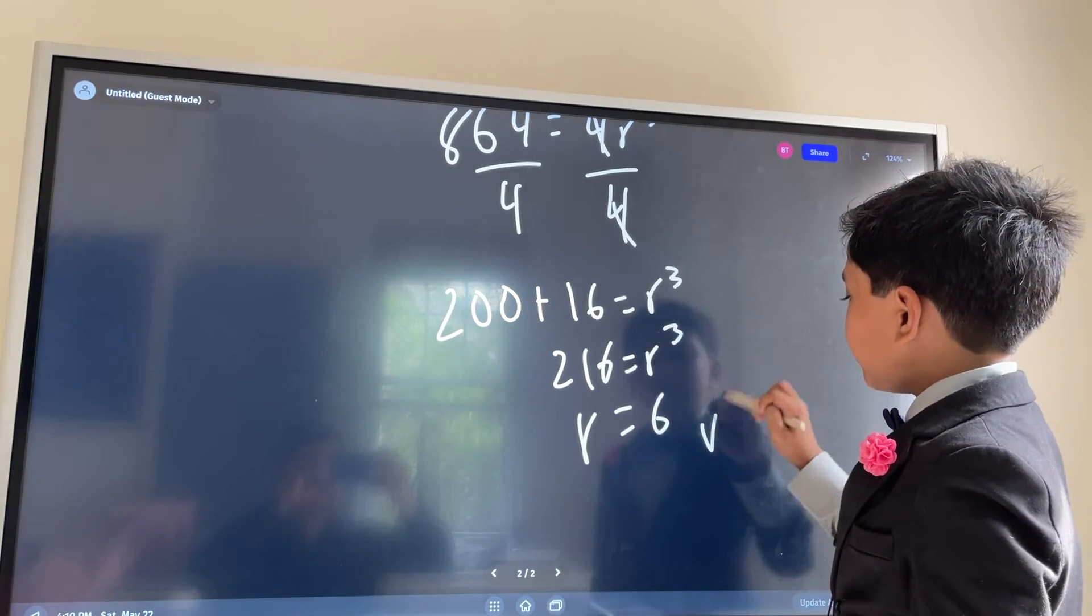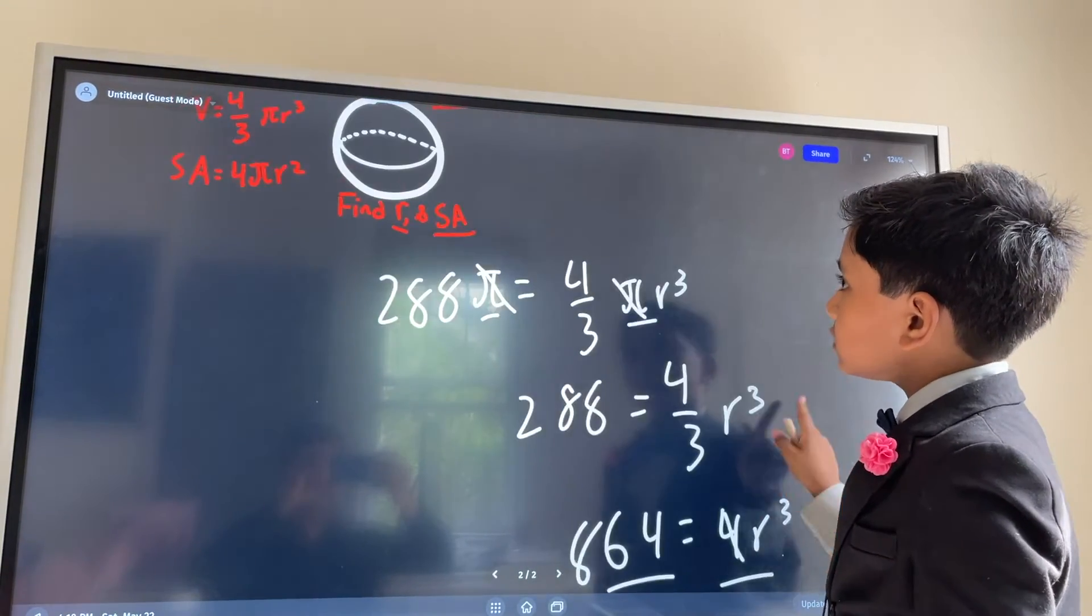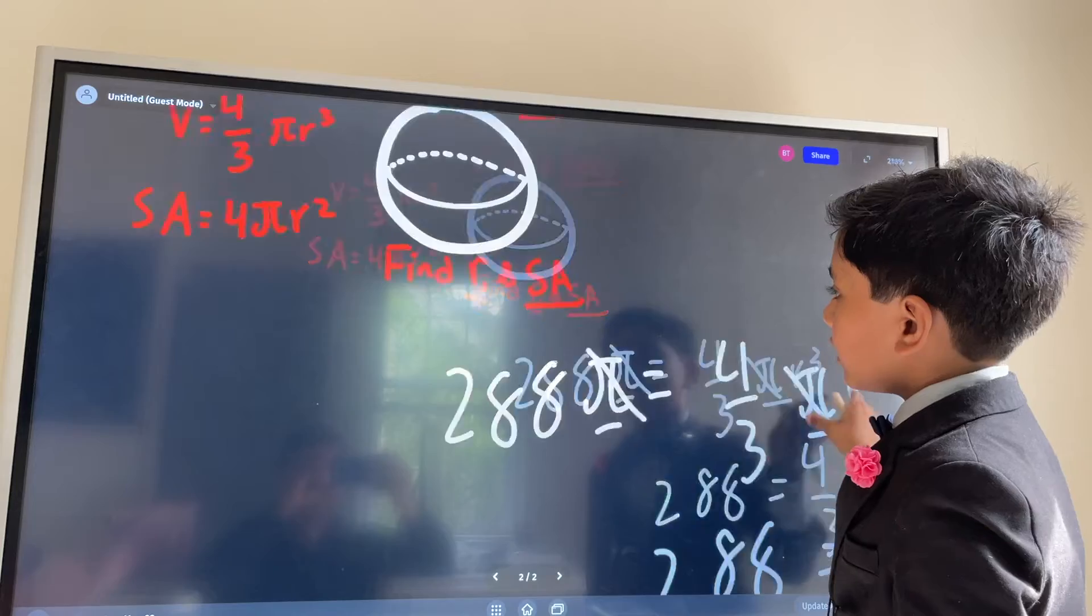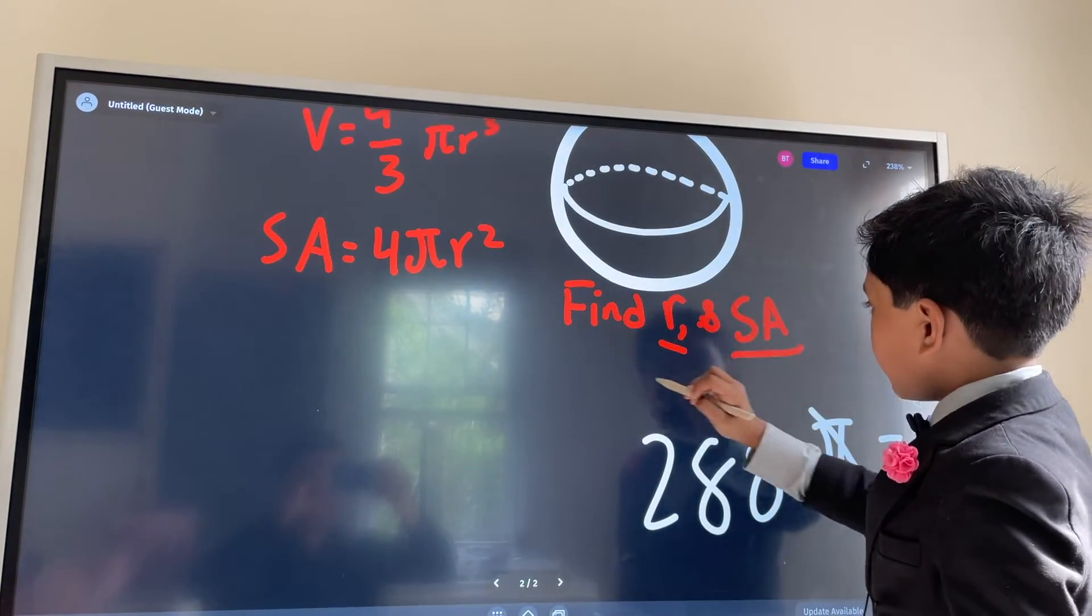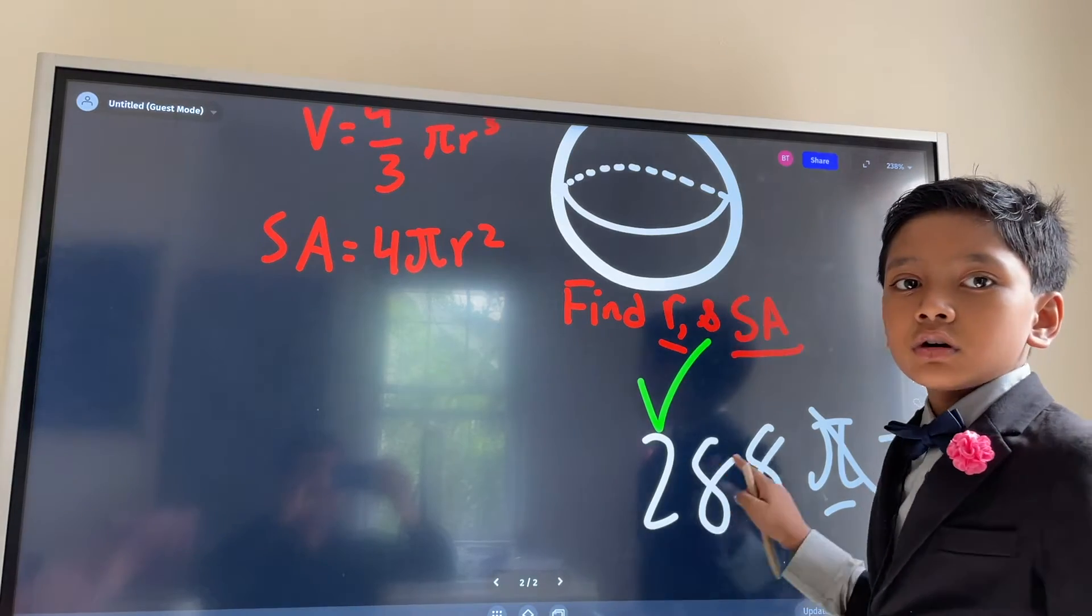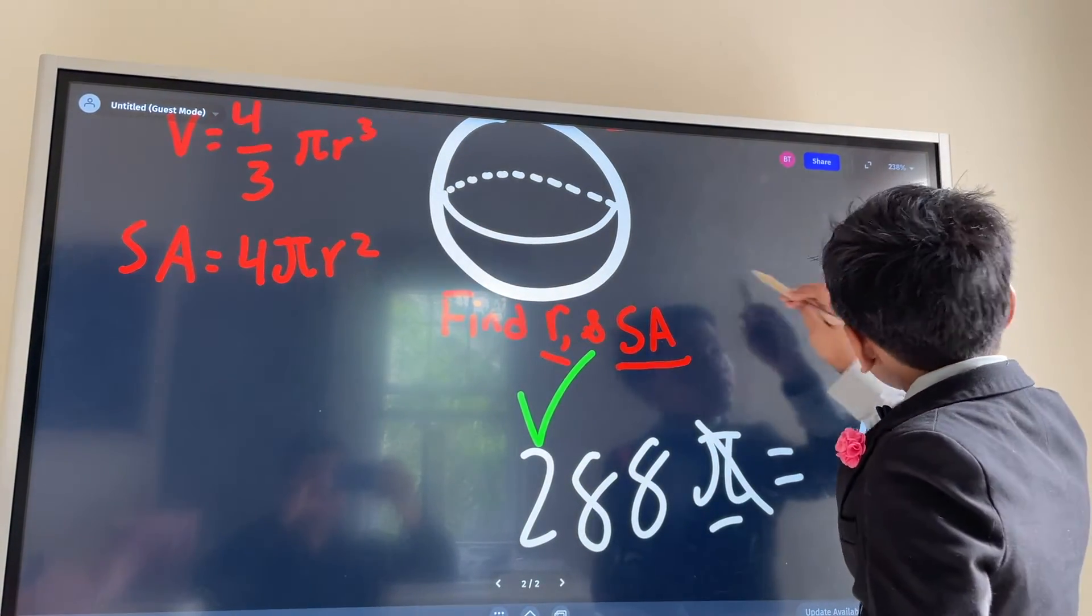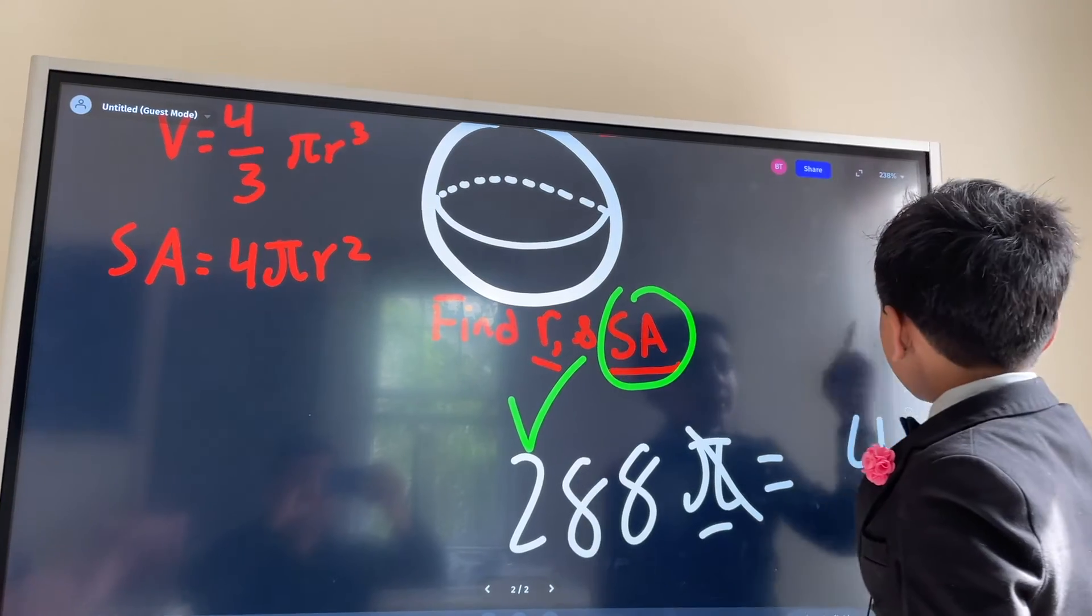Alright, so now we've found the radius. Let's go all the way back up. And we know that the radius is done, so we'll put a big fat check over there. So now what about the surface area? How can we find that?